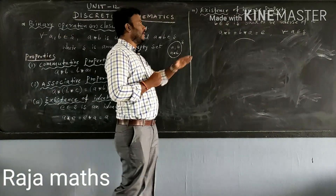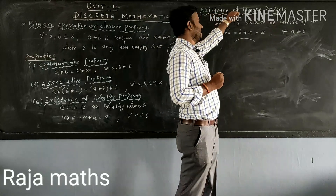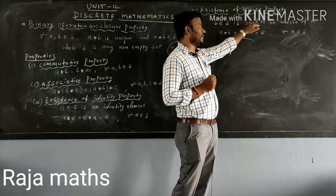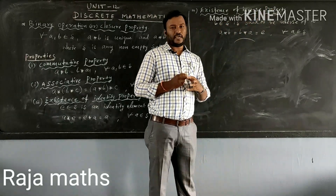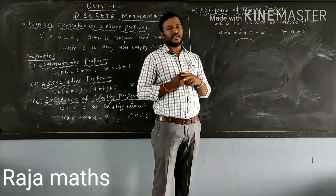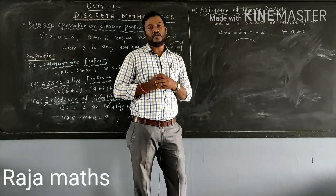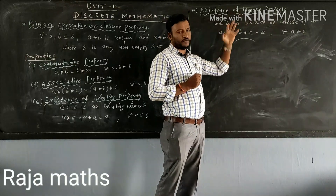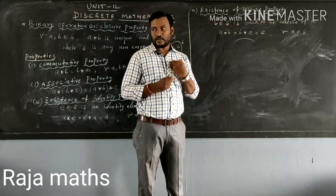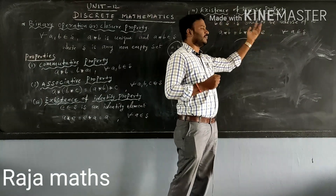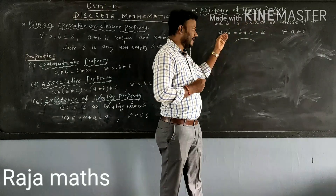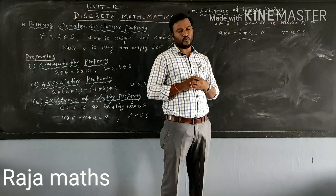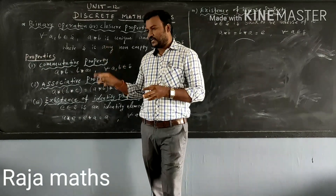Next one is existence of inverse property. Now b belongs to S. This is the inverse of a. Inverse property is true. Now the group property is true.